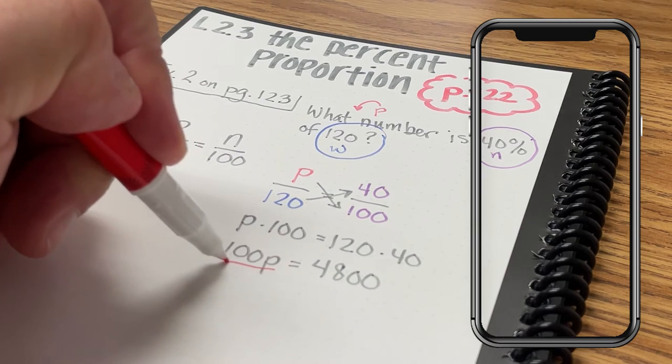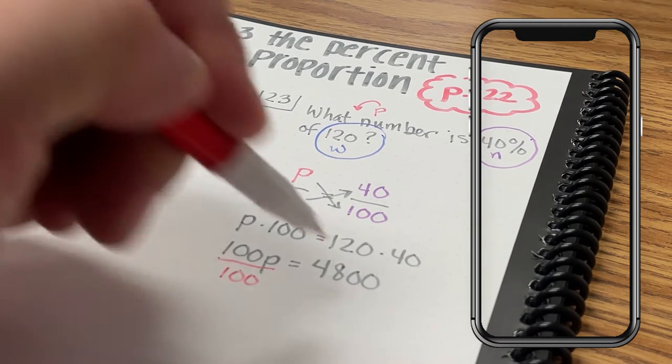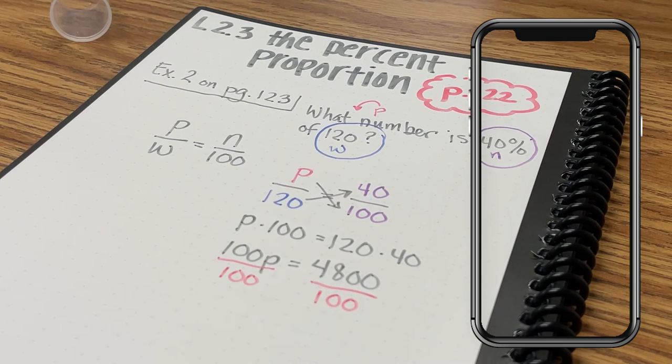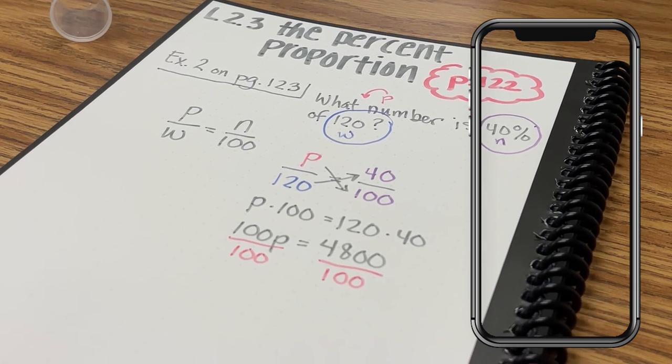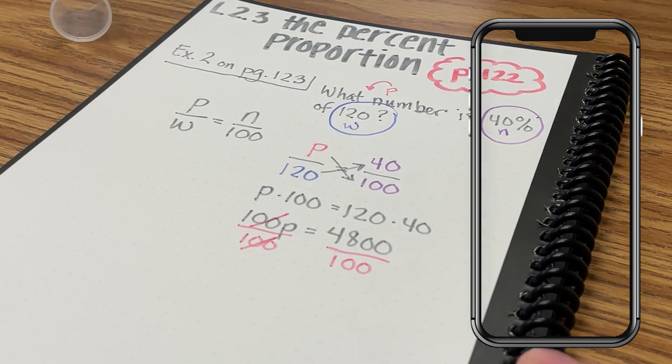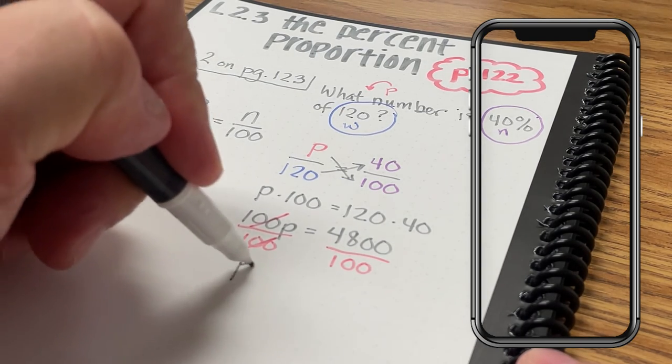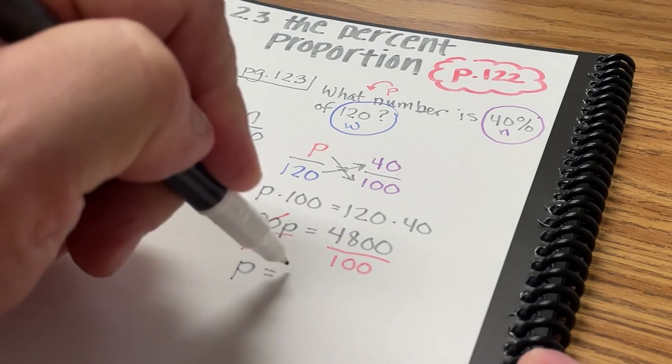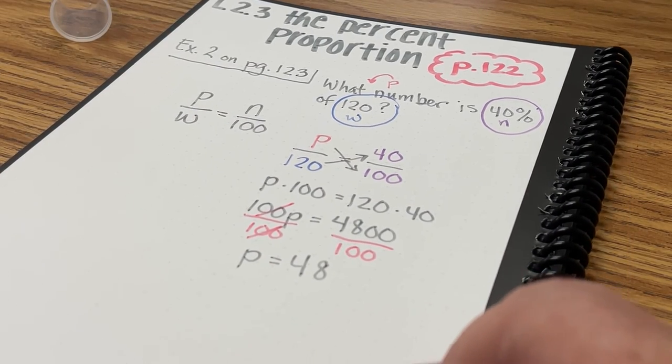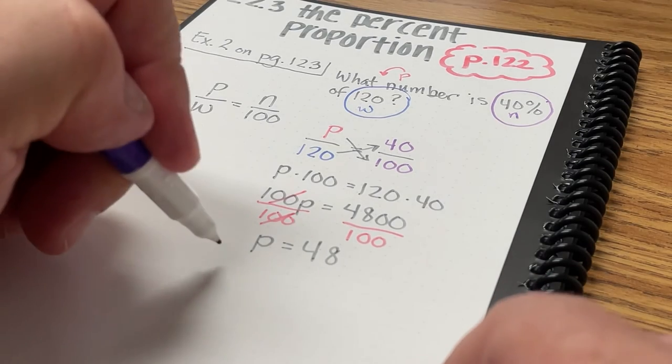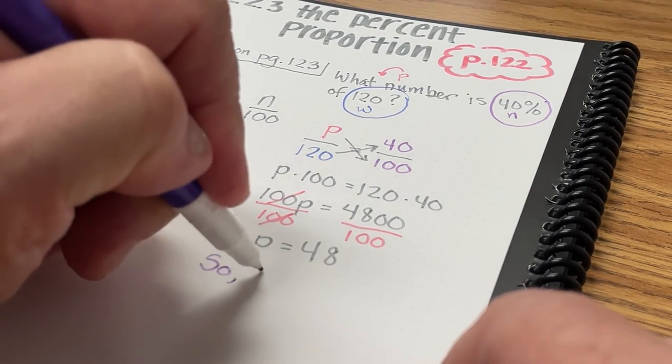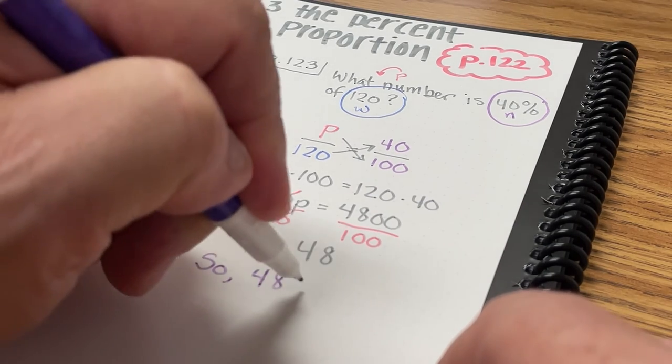To find out what P is, I'm going to divide both sides of the equation by 100. And 100P divided by 100 is just going to be 1P or just P. And 4800 divided by 100 is 48. So I can say that 48 is 40% of 120.